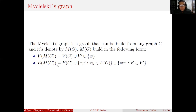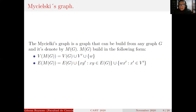The edge set of the Mycielski's graph is equal to the union of these sets of edges. E(G) is the edge set of G. Additionally, for every edge in G, we have a new edge from vertex X to the copy of Y in V′. The last set means that we join every vertex in V′ with the vertex W.